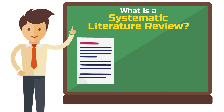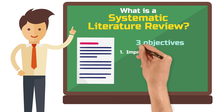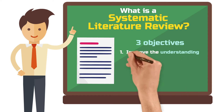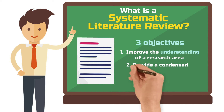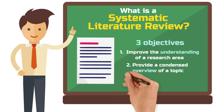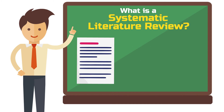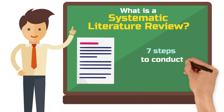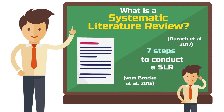A systematic literature review can pursue three different objectives: to develop an understanding of a research area and to explain a topic in detail; to provide researchers with a condensed overview of a large number of publications on a specific topic; or it can be used as a basis for theory development or theory testing. To enable you to create such a review, we will now look at the seven steps, based on my own experience as well as the work of von Brocke and colleagues and Durach and colleagues.